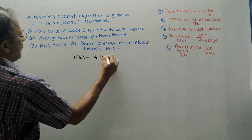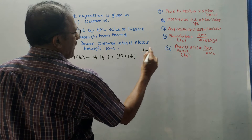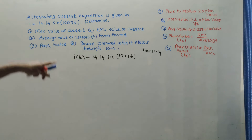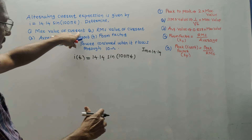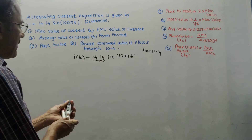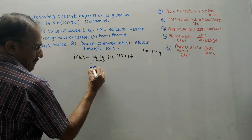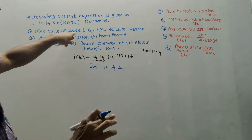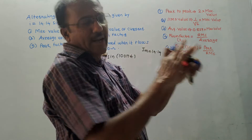From the given equation, the amplitude associated with the sine term gives the maximum value. So Im = 14.14 A. For the RMS value: I_rms = (1/√2) × Im = (1/√2) × 14.14 = 9.9984 A ≈ 10 A. If you know these five formulas you can attempt any numerical related to AC quantities.